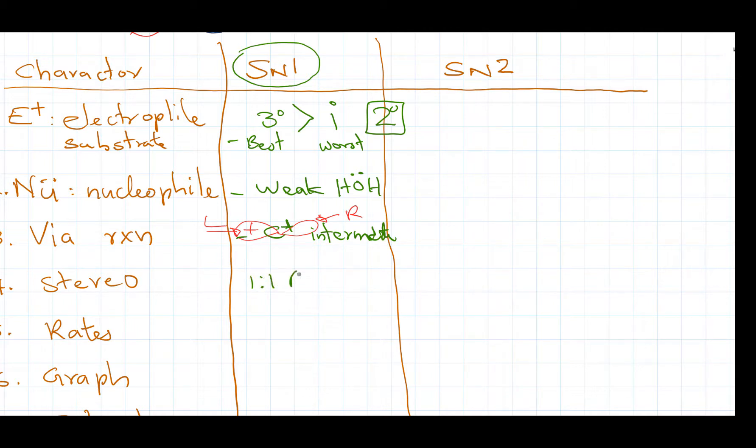So the stereochemistry would be in this case equal opportunity 50-50, one to one. It's going to generate racemic mixture, 50% of R, 50% of S.